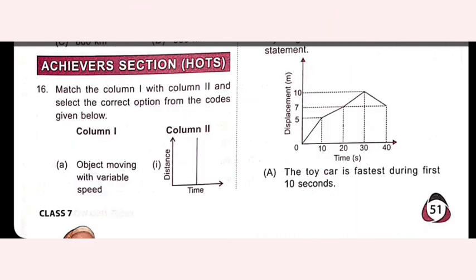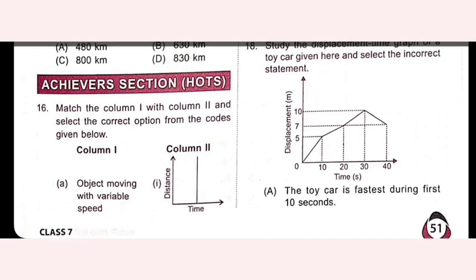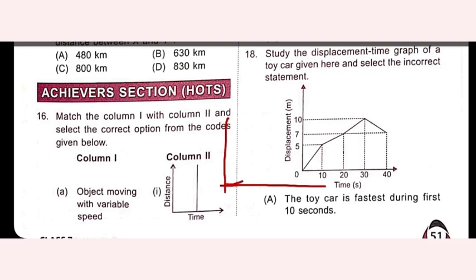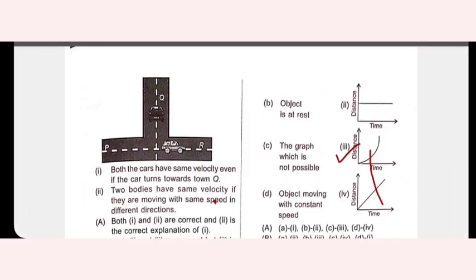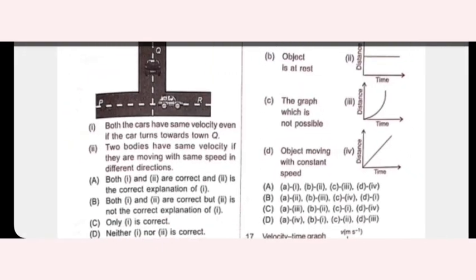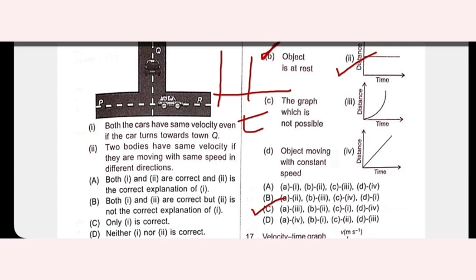Match the column: Object moving with variable speed corresponds to a curved distance-time graph (A with 3). Object at rest corresponds to a horizontal line — distance does not change as time increases (B with 2). The graph showing increasing distance with no time change is not possible. Object moving with constant speed gives a straight diagonal line. Option C is the right answer.